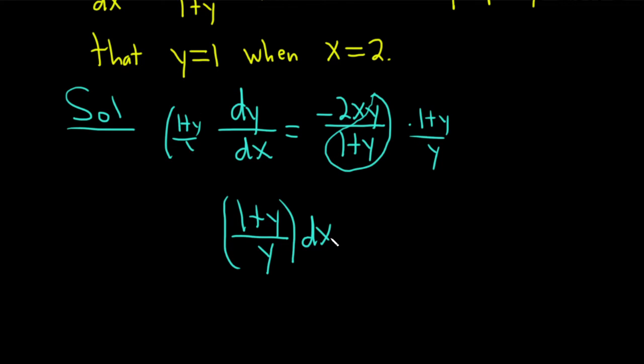I should have a dy there. That's a little typo. Let me go ahead and clean that up. So this should be dy, right, because I'm multiplying by this. Let me show you again.